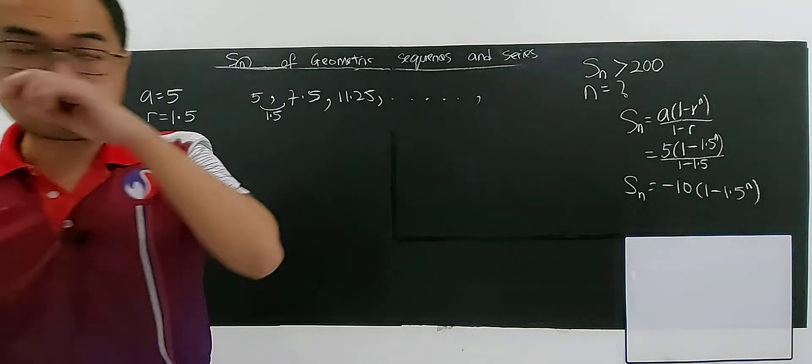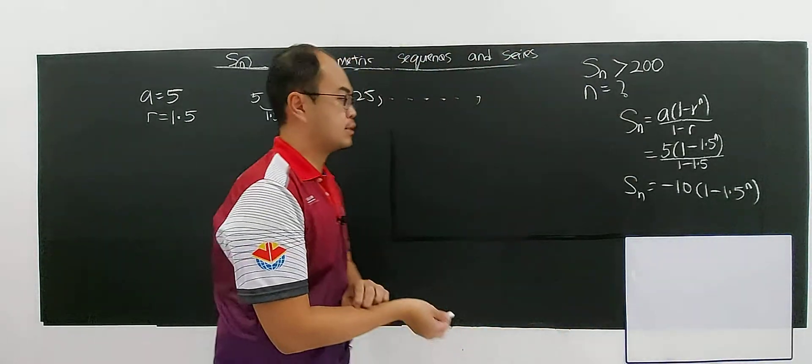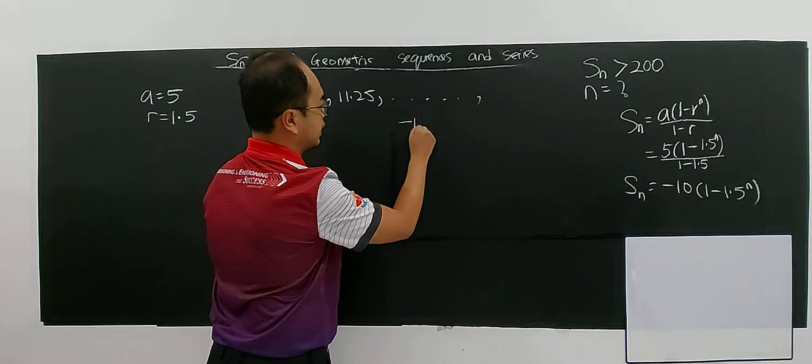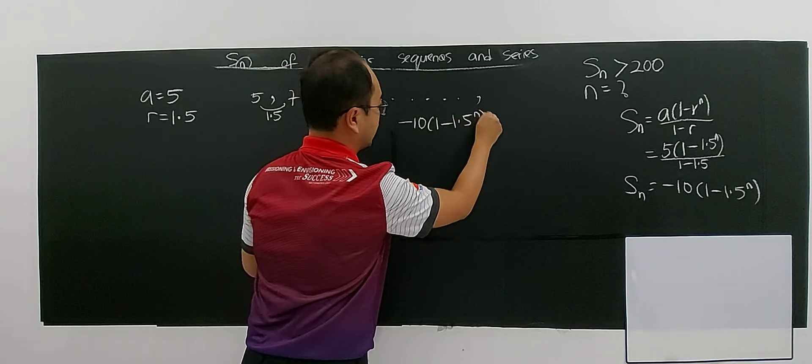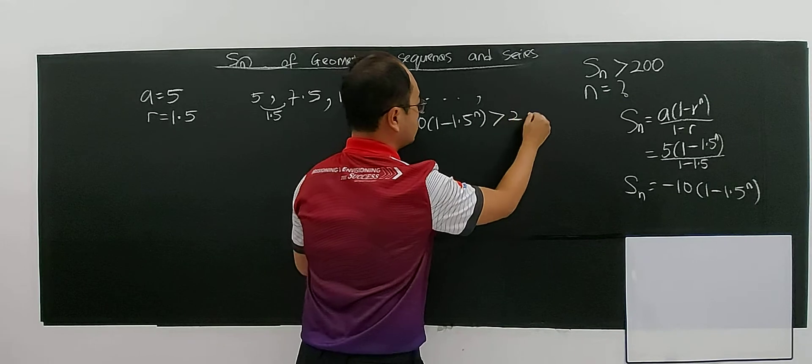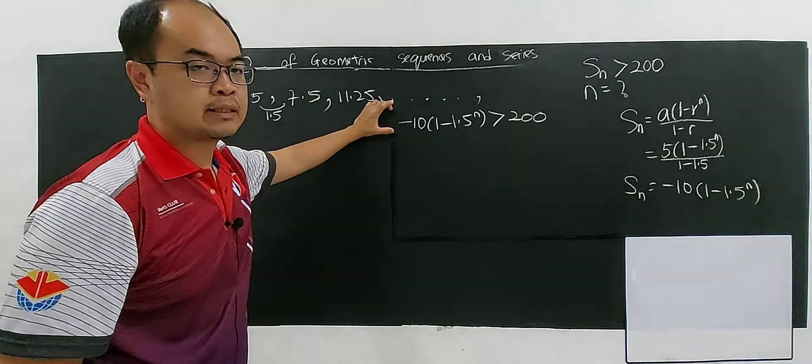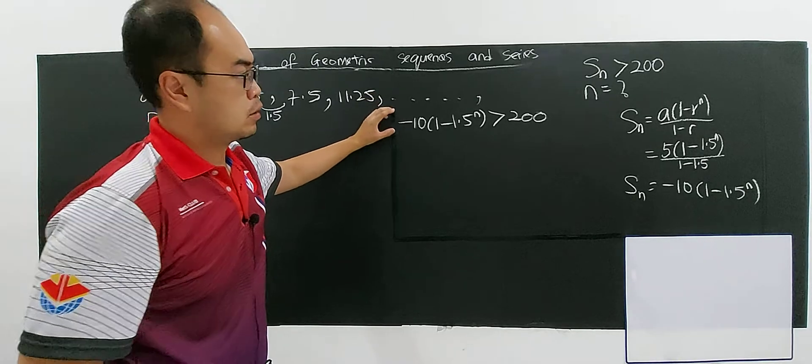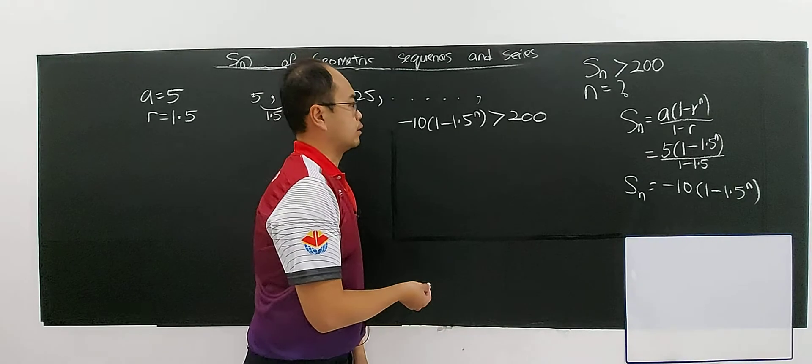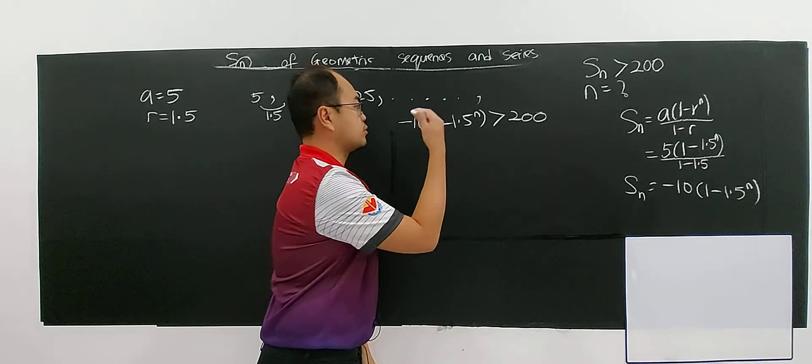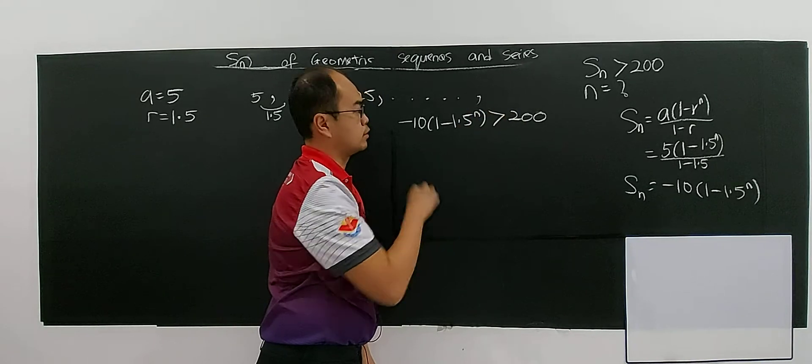So the question here is SN must greater than 200. Exceed 200 means that negative 10 times 1 minus 1.5 to the power n must be greater than 200. This is the setting. You want to find the value of n, when is the value of n that it will turn more than 200.